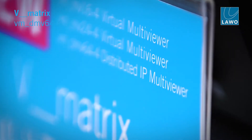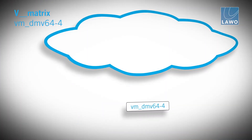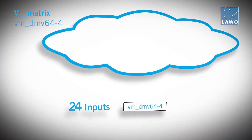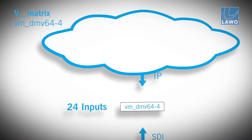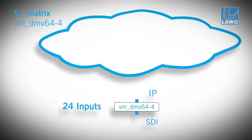The VM DMV 64.4 can be divided into an input stage and an output stage. All virtual modules can handle both the input stage and the output stage at the same time. The input stage can take from up to 24 sources, either from the IP side or the FDI side.